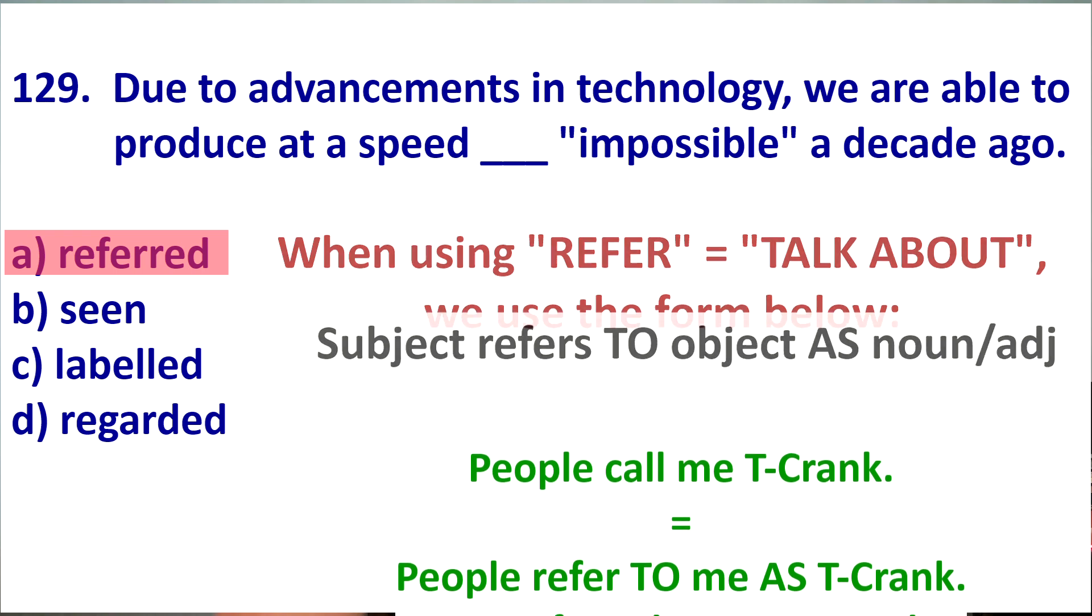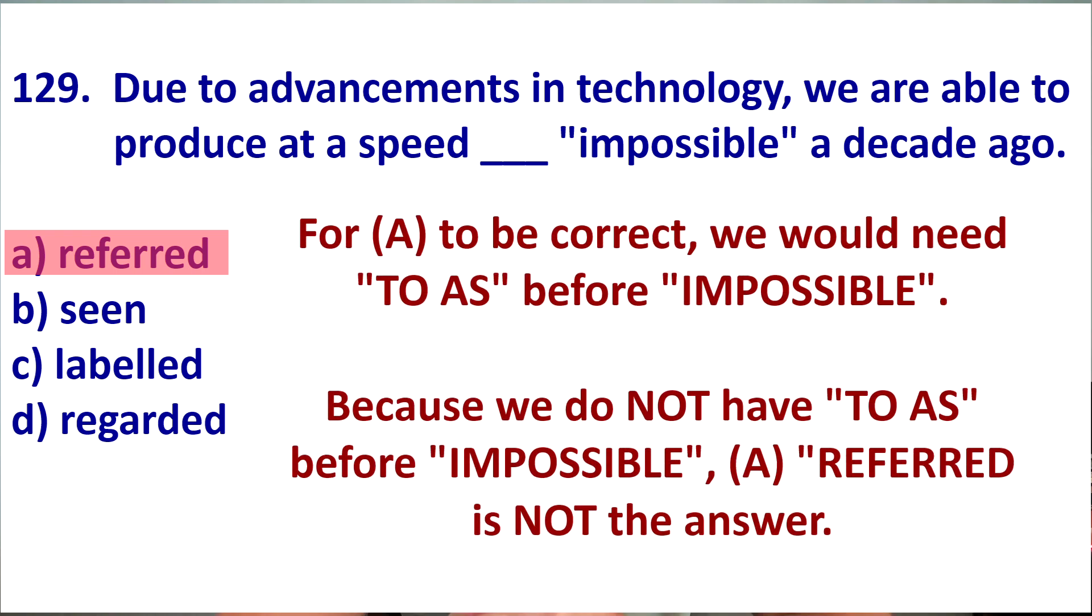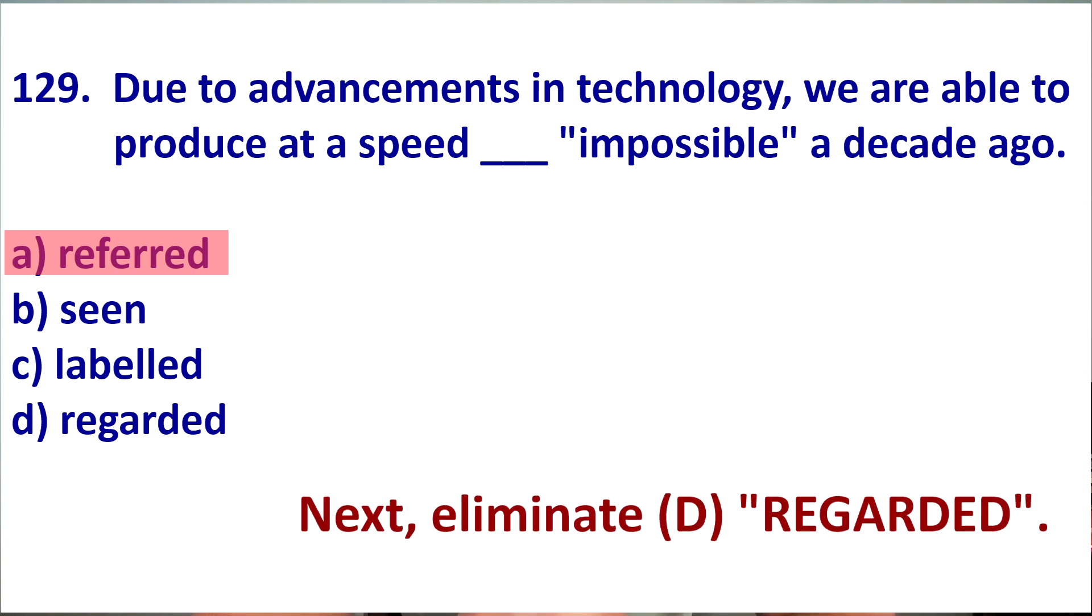So, if we look at the question and we have referred, we would have to see referred to as impossible. Because people refer to the speed as impossible. So, a speed that was referred to as. We don't have to. We don't have as. We don't have an answer. Alright, so the next part.